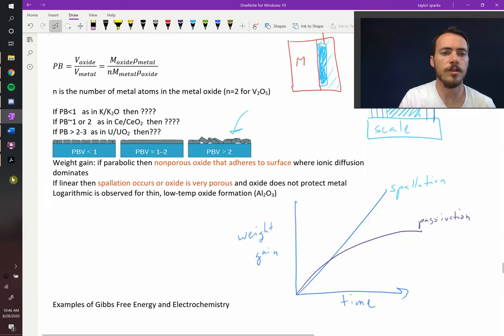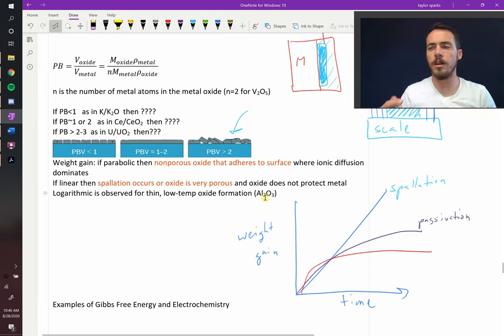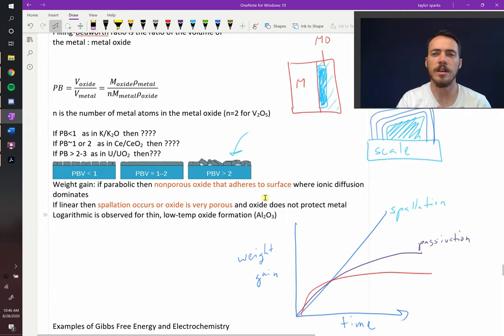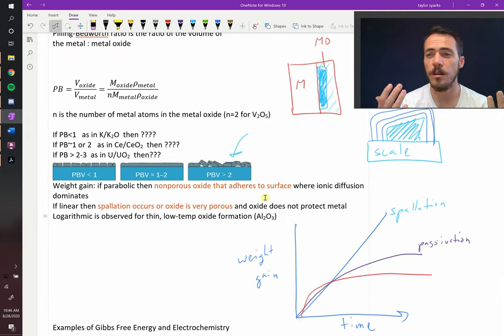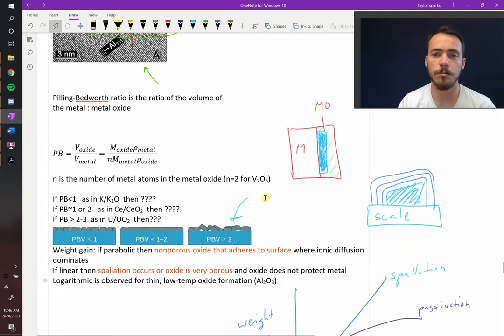And then they even show logarithmic, which is just slightly less than this. And that's typically for thin film, low-temperature oxides, like aluminum oxides. It's an even better form of passivation. So that is how you can get oxidation occurring without any water present, with metals simply reacting with air to form scales or oxides.